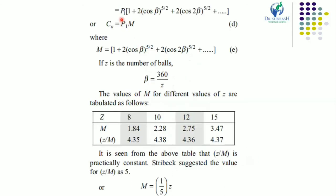So therefore, the static load carrying capacity is C₀ = P₁ × M = K·D²·Z/5. If Z is the number of balls, then with M = Z/5, the value of Z/M comes out to approximately 4.35 to 4.38 for different numbers of balls, confirming it is practically a constant value. Stribeck suggests Z/M ≈ 5.